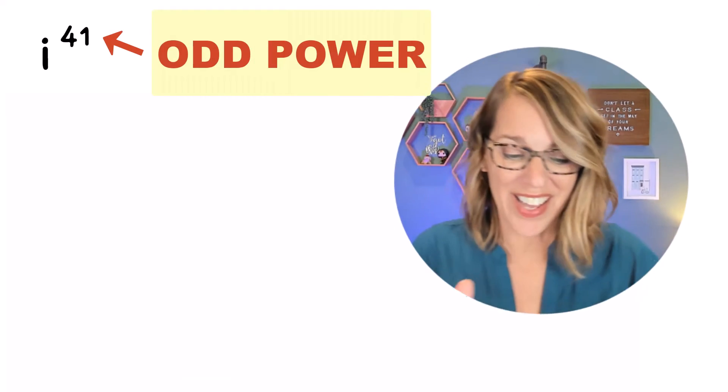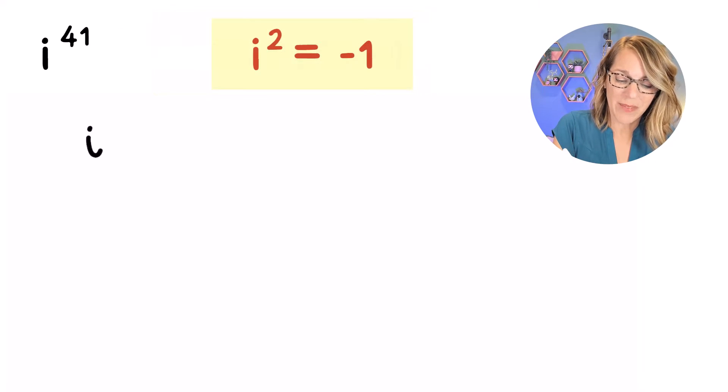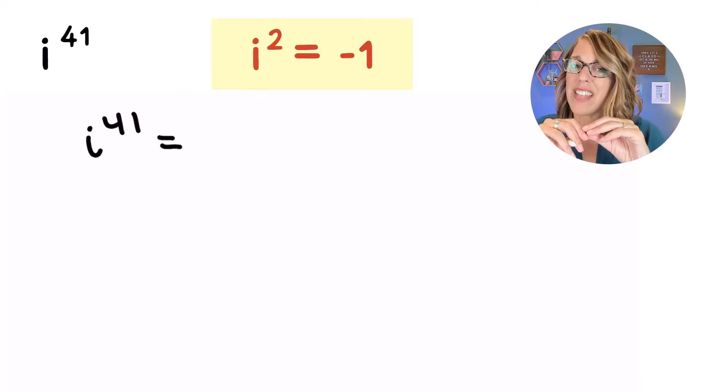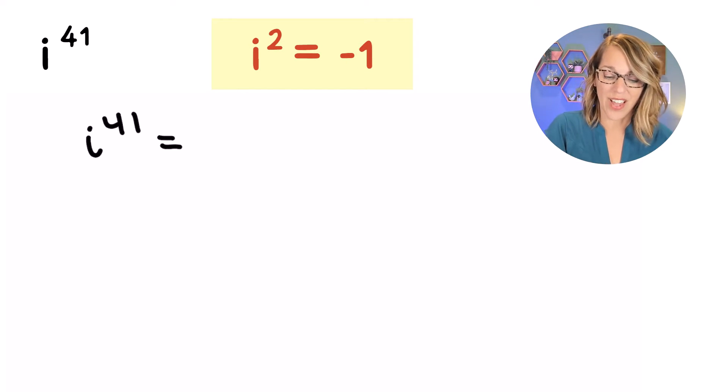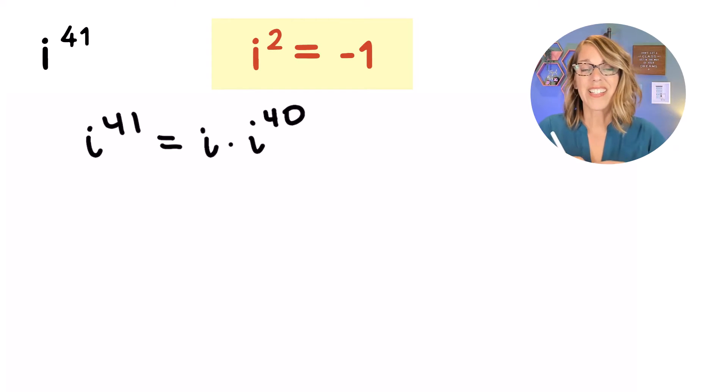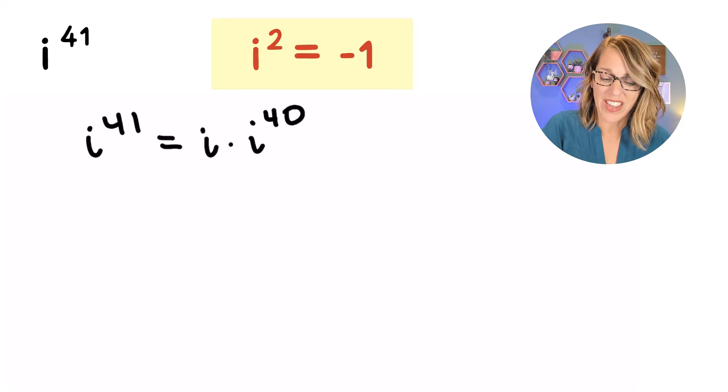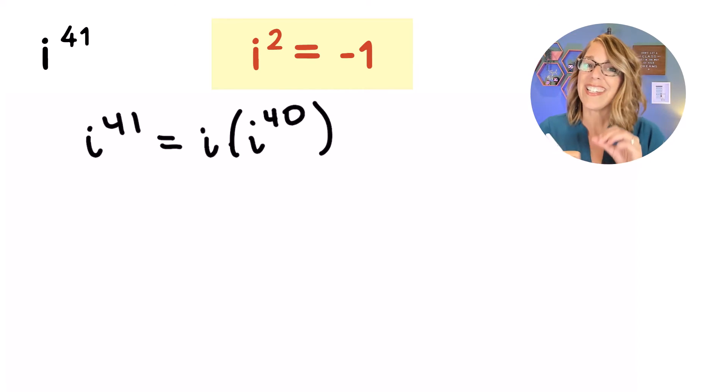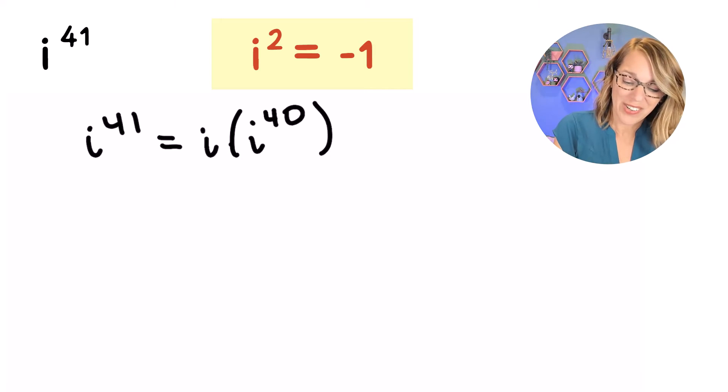But what happens when your power itself is odd? I want to do the very same thing that I did with the other examples. So instead of thinking of this as i to the 41st, I'm going to think of this as a single i times i to the 40th. I still have 41 i's multiplied together.